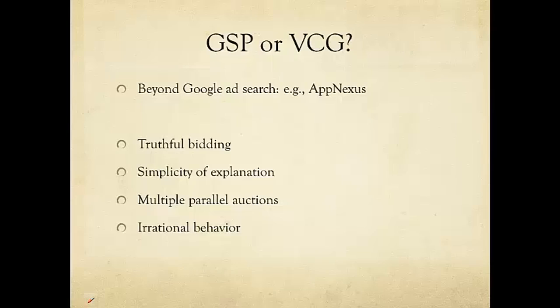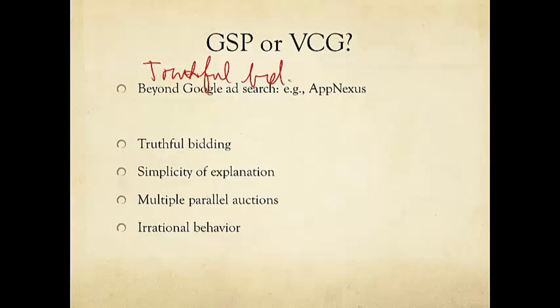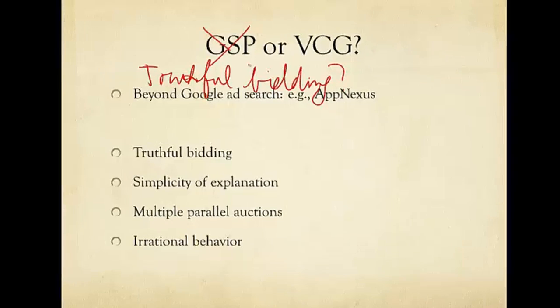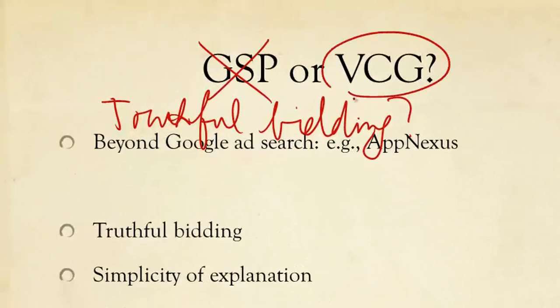So, what kind of auction will preserve truthful bidding in multi-item auction? What turns out, we know GSP doesn't do that, but VCG, Victory Clark Groves auction mechanism, would induce truthful bidding as a dominant strategy in auction as a game.